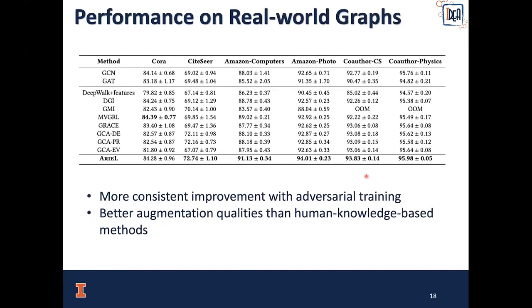First, the performance on clean graphs. We observed that ARIEL can achieve consistent improvements over previous baselines. For example, on Cora, CiteSeer, Amazon Computers, and Amazon Photo, ARIEL achieves a very large advantage against the baselines. On the other hand, if we compare the basic frameworks GCA and GRACE, GCA uses an adaptive data augmentation method based on human knowledge, while GRACE is a basic version with no human knowledge in data augmentation. We can observe that the improvement achieved by this human knowledge-based data augmentation is actually very minor compared with ARIEL.